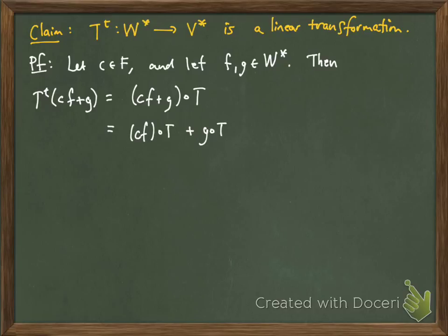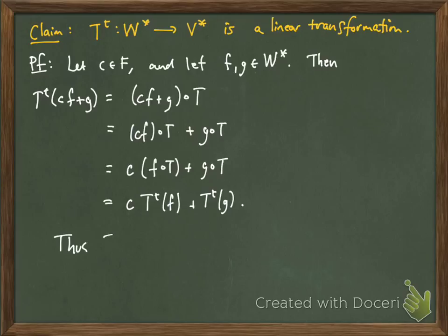which is CF composed with T plus G composed with T. But that's just C times the composition F of T plus G composed with T, which again, by definition, is just C times T transpose of F plus T transpose of G.